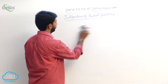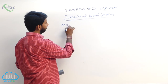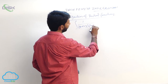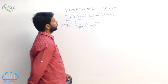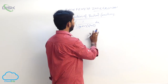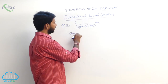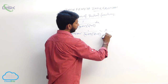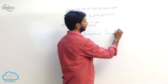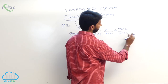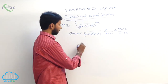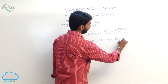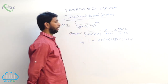Second example: integral of 1/((x+2)(x²+3)) dx. Resolve into partial fractions: 1/((x+2)(x²+3)) equals A/(x+2) plus (Bx+C)/(x²+3), since the second factor is degree 2. After taking LCM: 1 equals A(x²+3) + (Bx+C)(x+2). Find A, B, C.